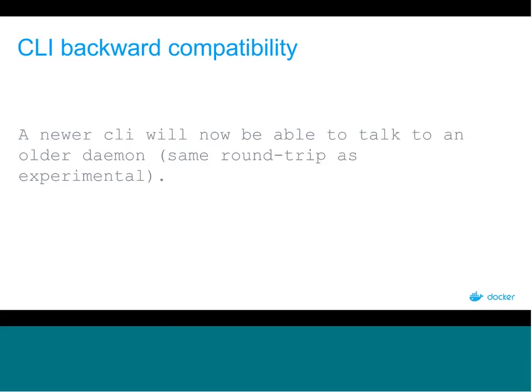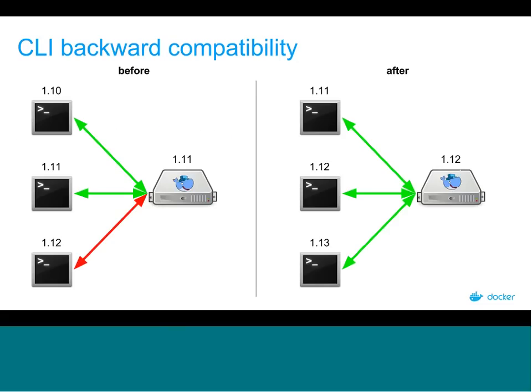Next, the CLI backward compatibility. With 1.13, you can use a newer client to talk to an older daemon. It works the same way as experimental — the CLI talks to the daemon, gets the information about whether it's experimental and what version the daemon is, and then it can downgrade accordingly.